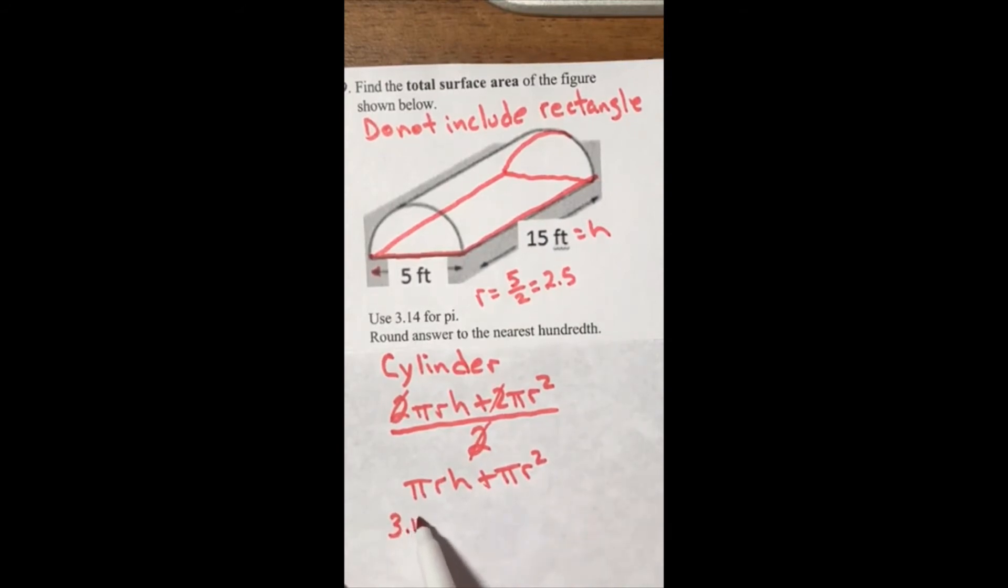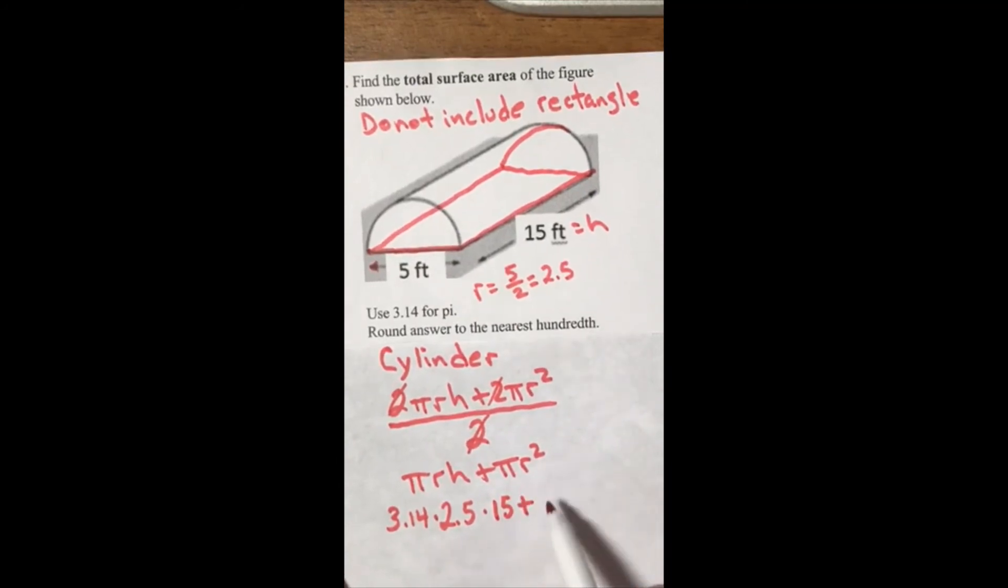So I can now start this process: 3.14 times r, which is 2.5, times 15, plus 3.14 times r squared, which is 2.5 squared. Put that in the calculator and finish.